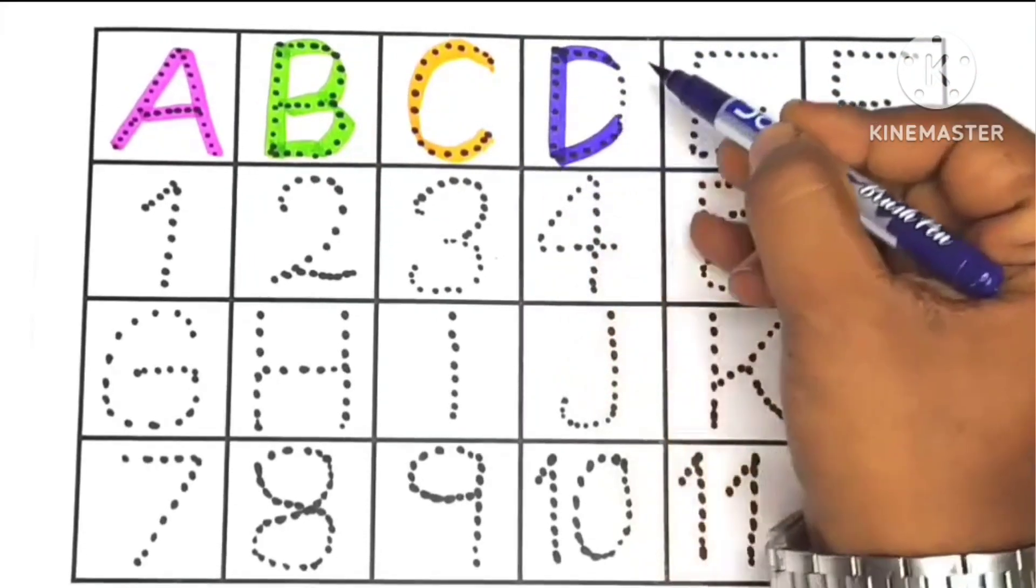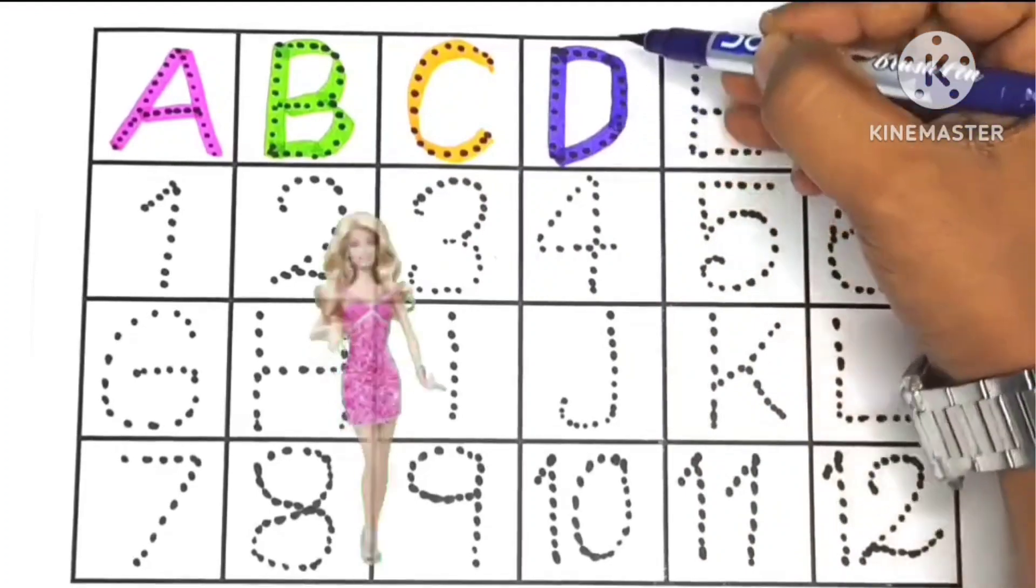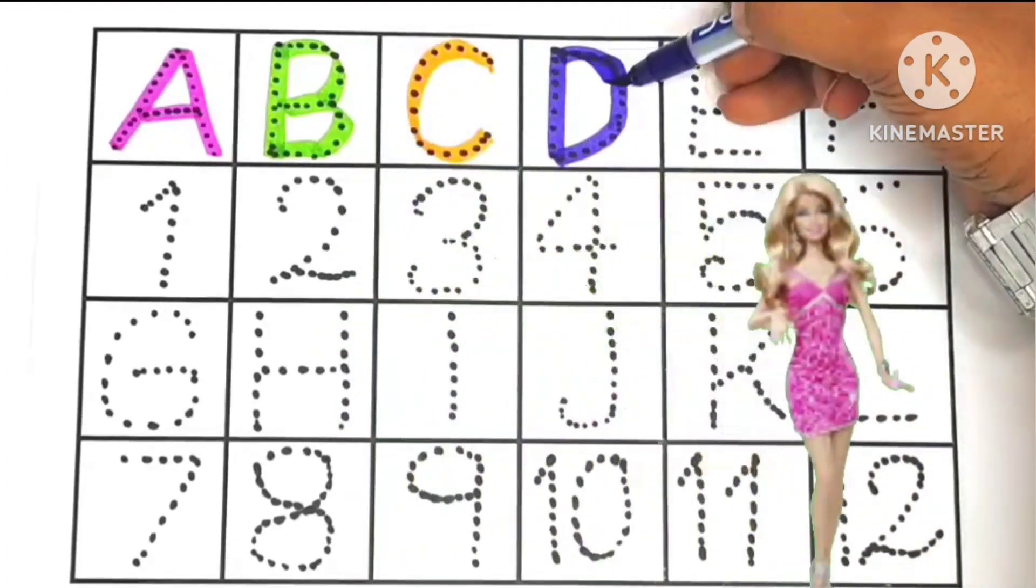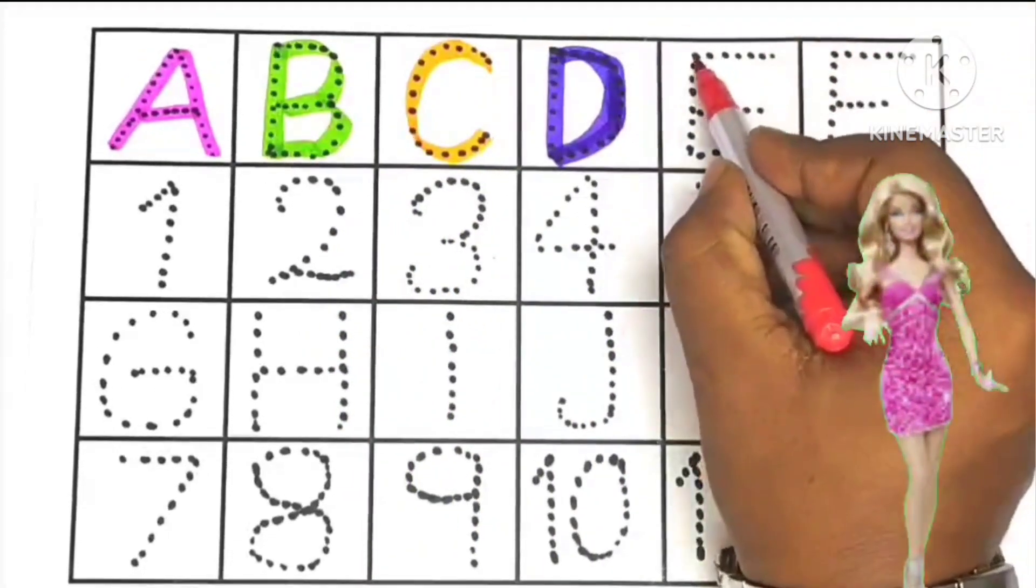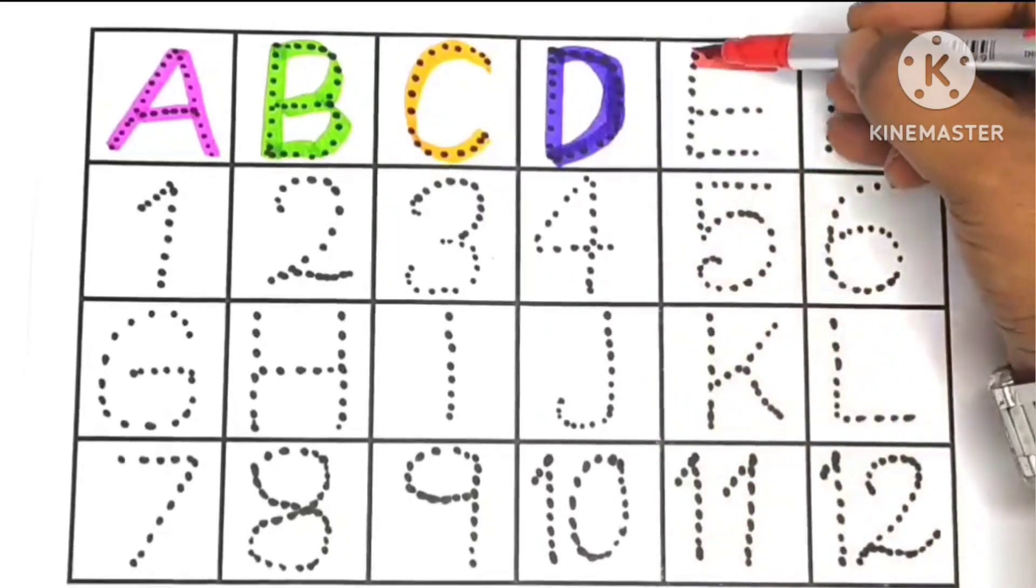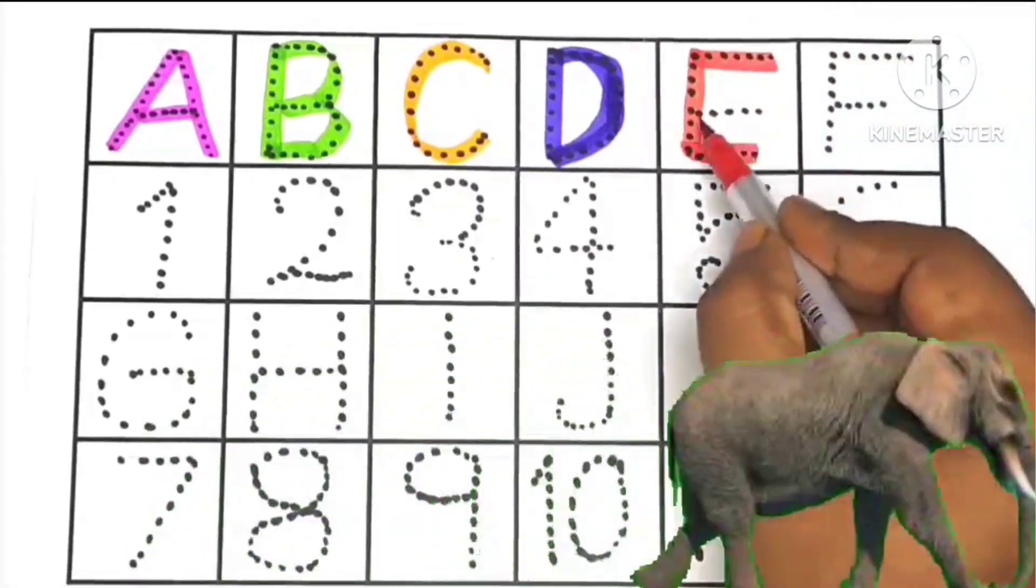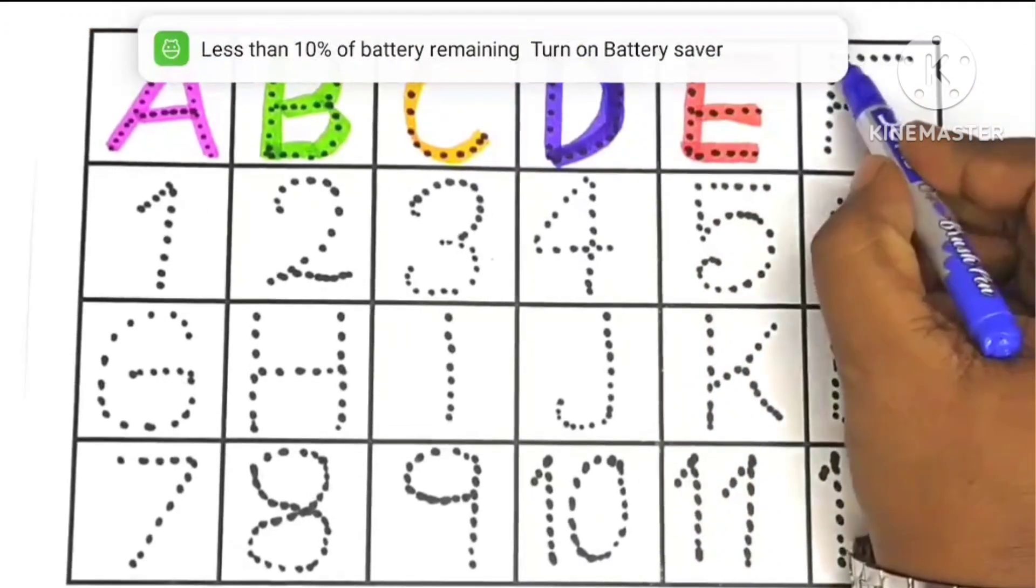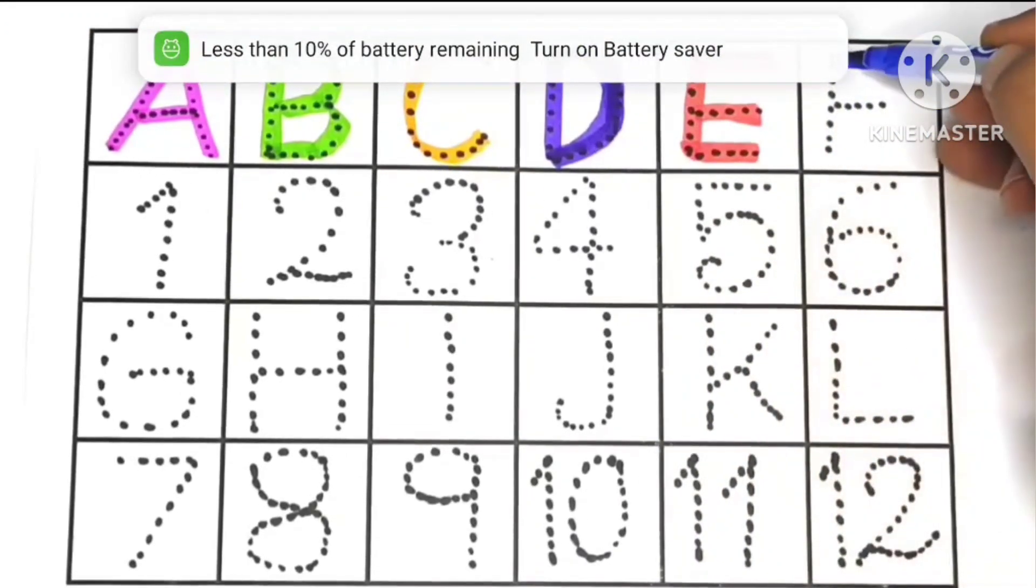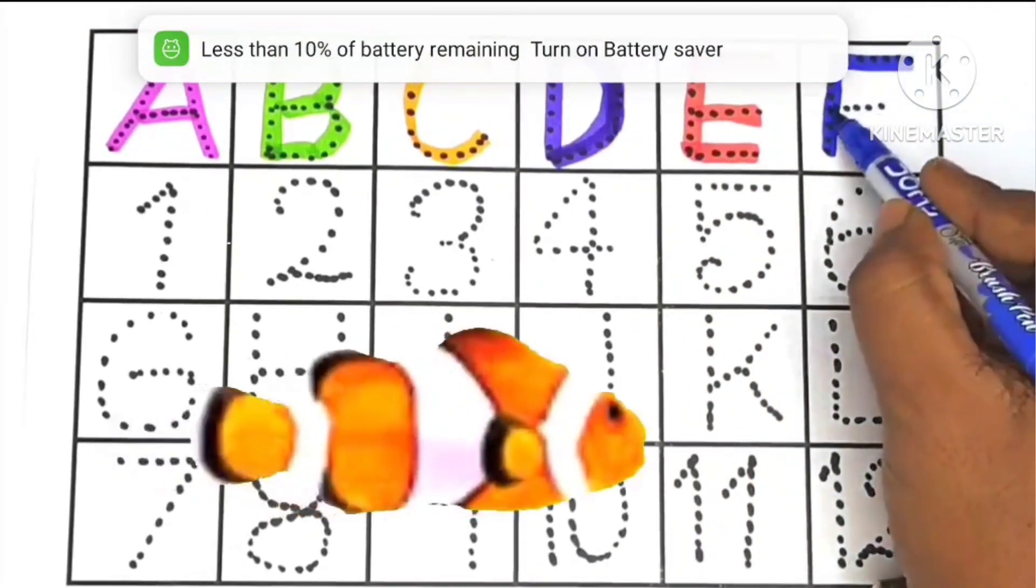D, D for doll, D for dolphin. E, E for elephant. F, F for fish, F for...